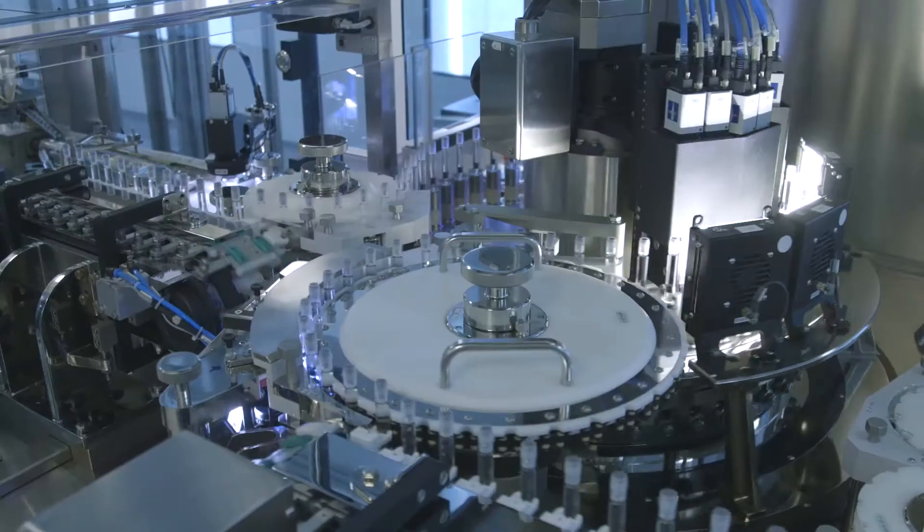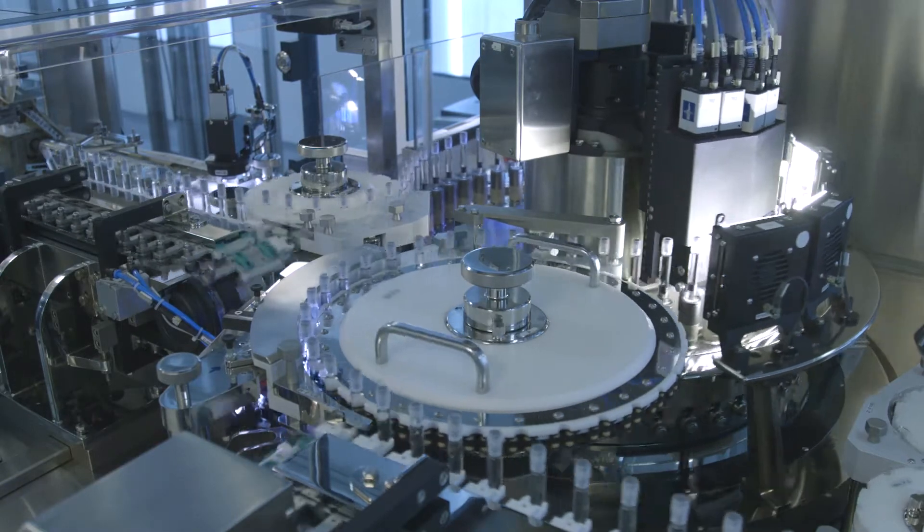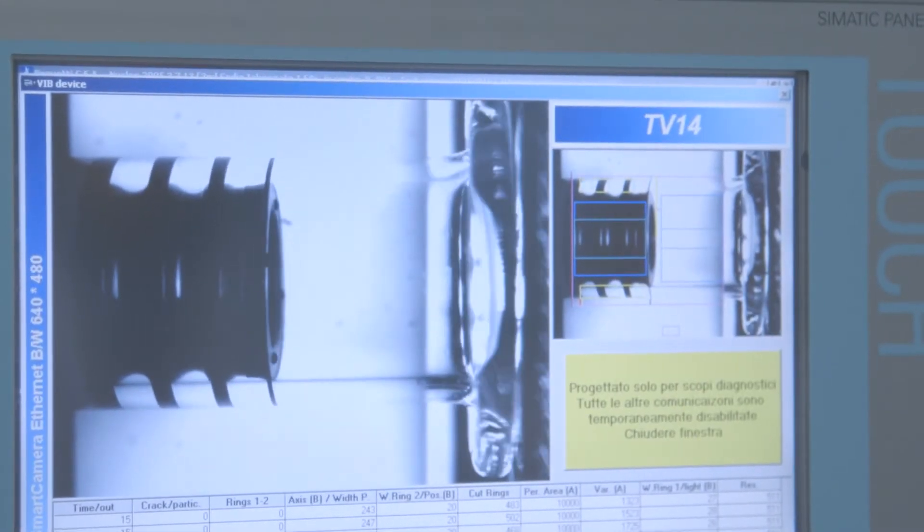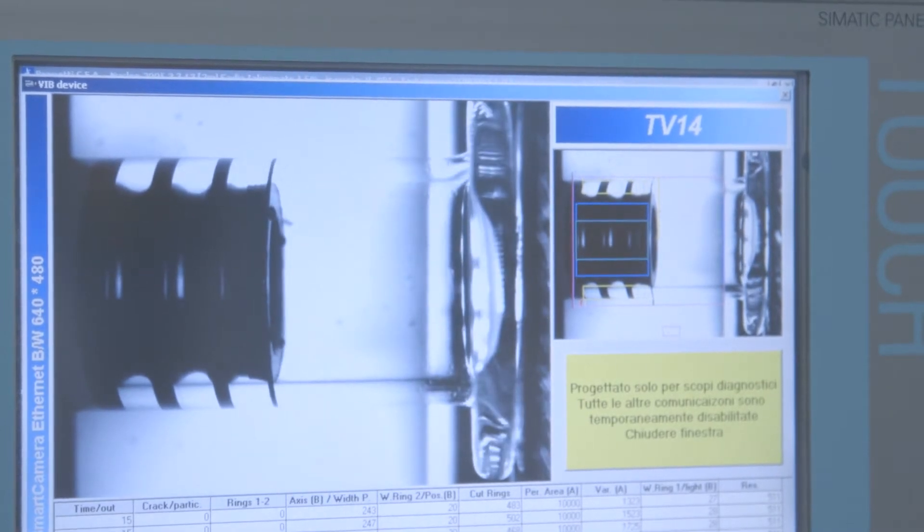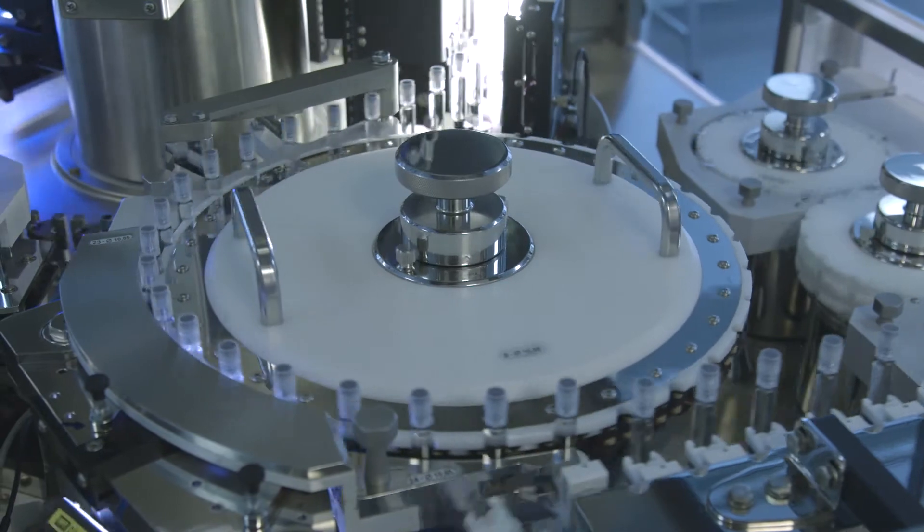The automatic visual inspection machine consists of 15 cameras. The inspection machine first checks the integrity of the flange and the plunger with a camera. Then the syringes are conveyed onto the carousel where seven cameras inspect the syringes for cosmetic defects.